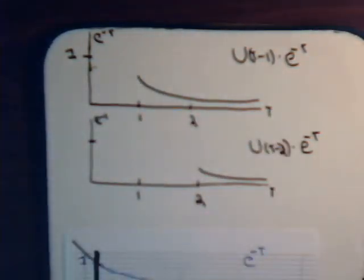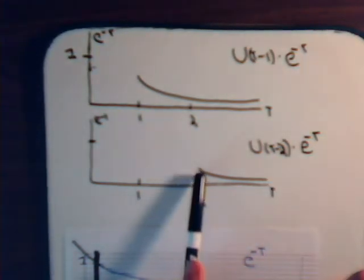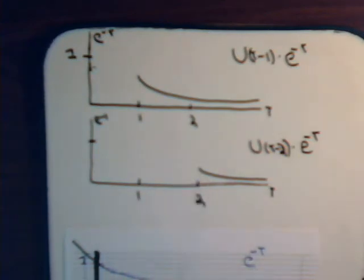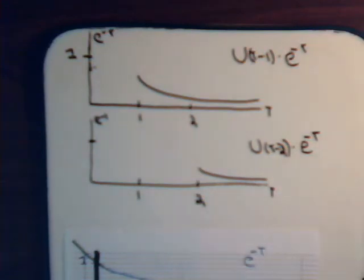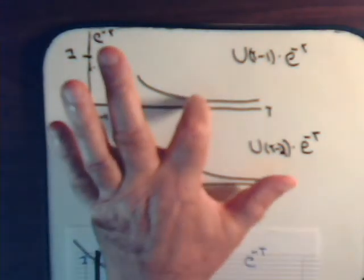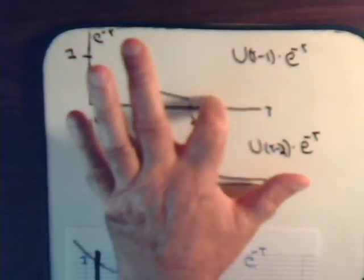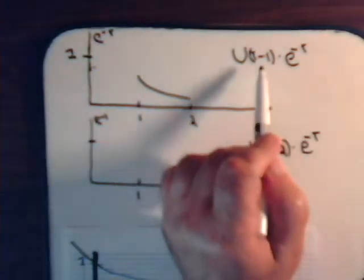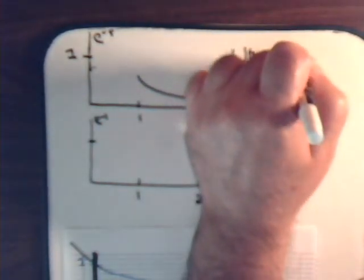Or, if we have u of t minus 2 times that, then it's going to be just this part. So now, if I take this and I subtract this out, then this part is going to be gone like that. So that segment right there, that is this minus this.